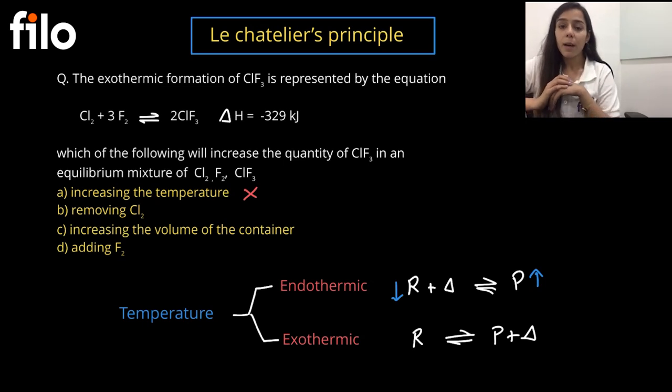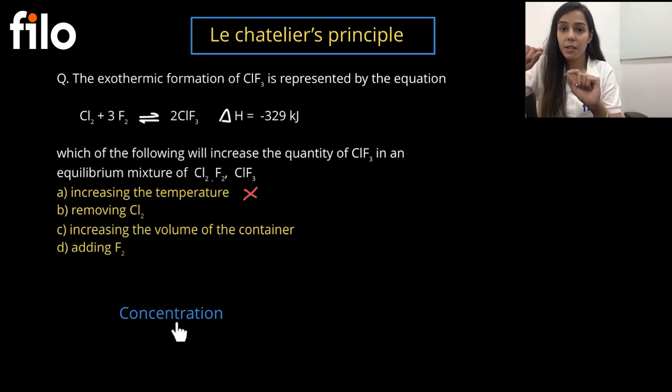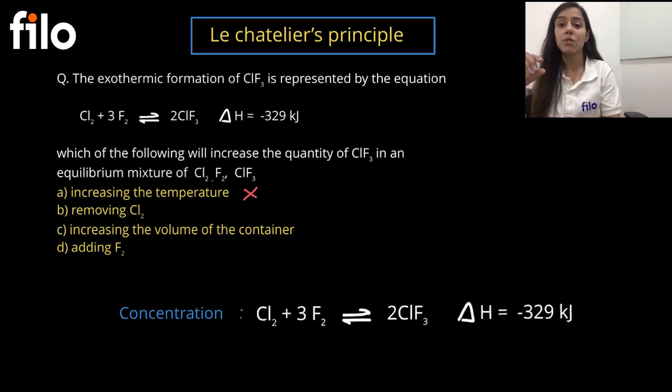It is removing Cl. This is another type of stress in terms of concentration. To remove Cl means that Cl will reduce. Cl is reactant. If I reduce Cl, that means the possibility to collide and form the product will be less. If I reduce Cl, my equilibrium will have more stress on the reactant side. To attain that equilibrium, the equilibrium will shift in the backward direction. So we cannot choose this answer.